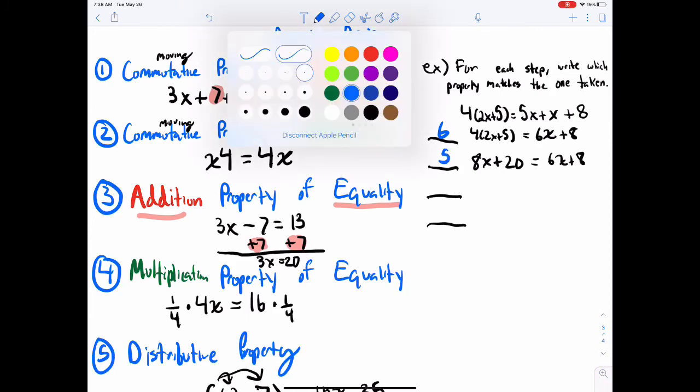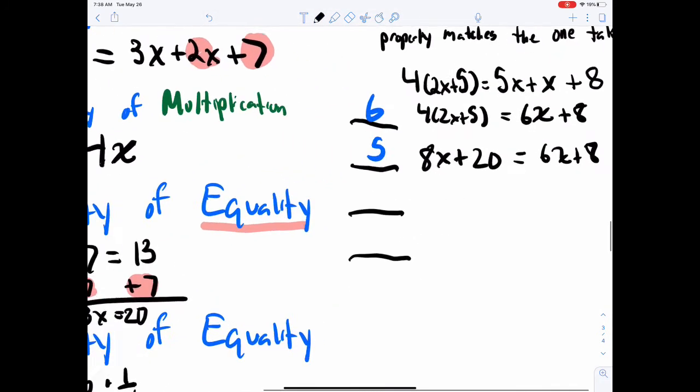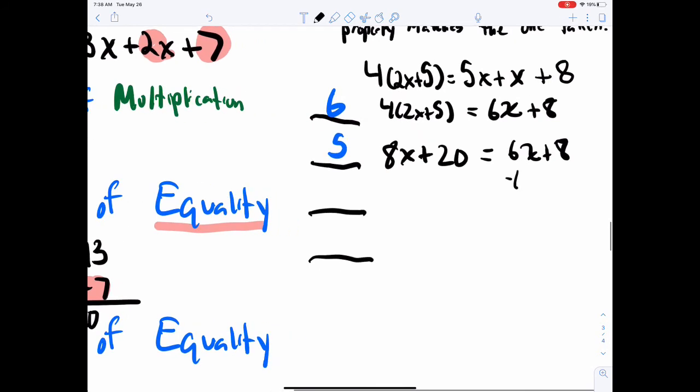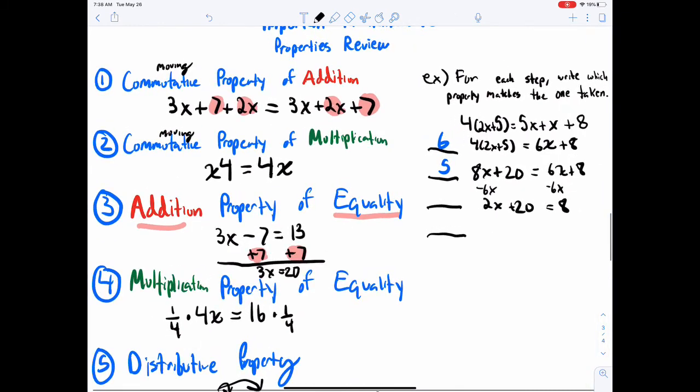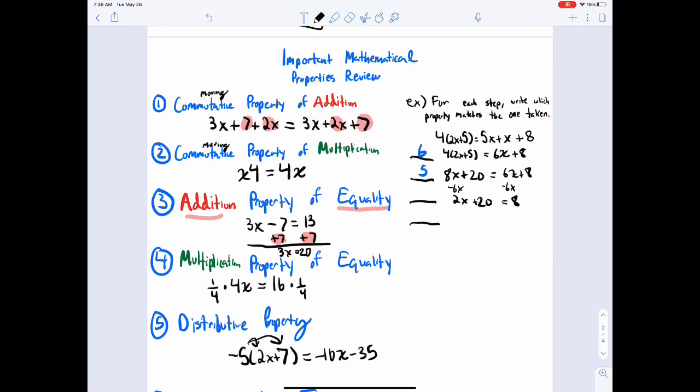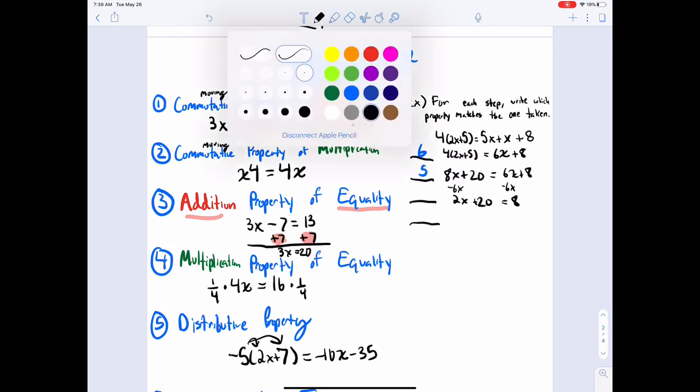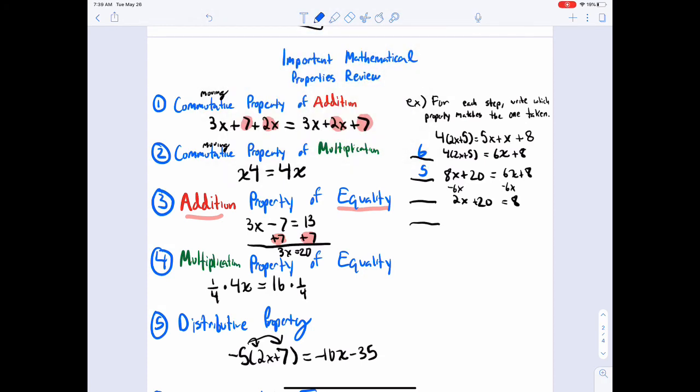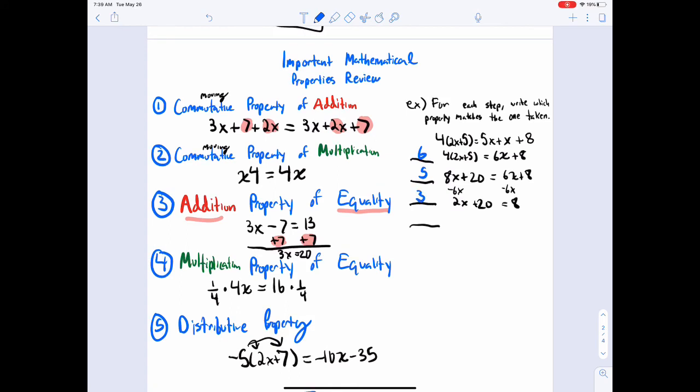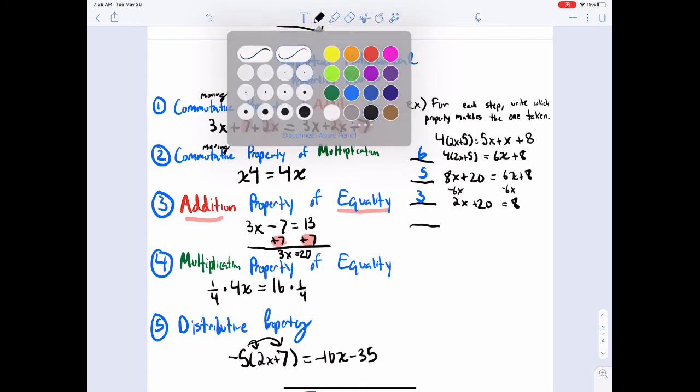All right, then I'm going to go like this. Subtract 6x to both sides, I'm gonna get 2x plus 20 equals 8. What did I do there? I subtracted. We don't have a subtraction, but subtraction and addition are very closely related. That's still going to be one of these equality ones because we did the same thing to both sides. That's going to be the addition property of equality.